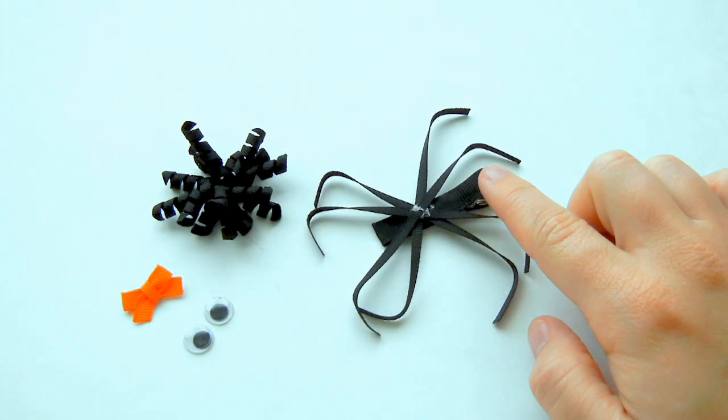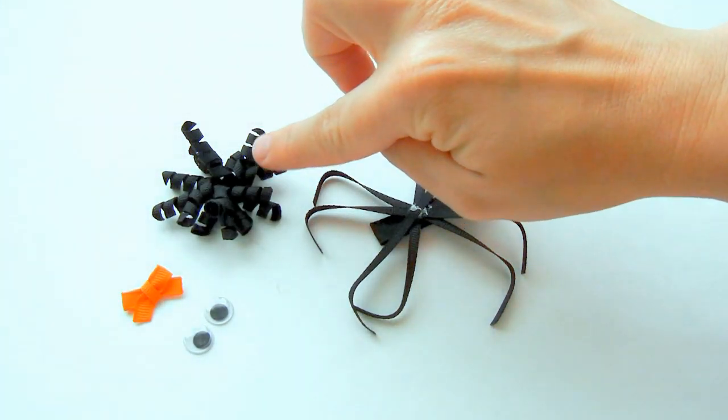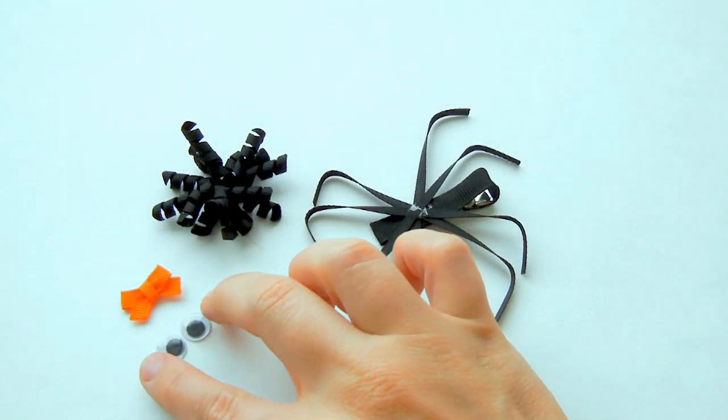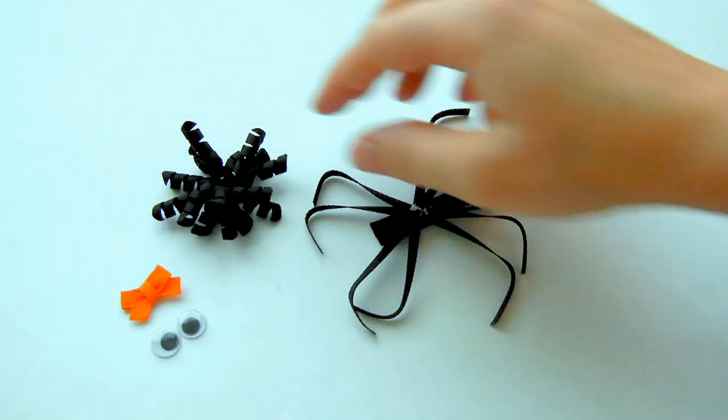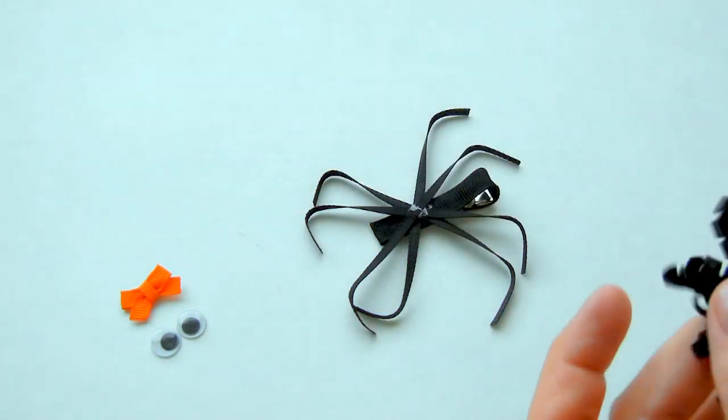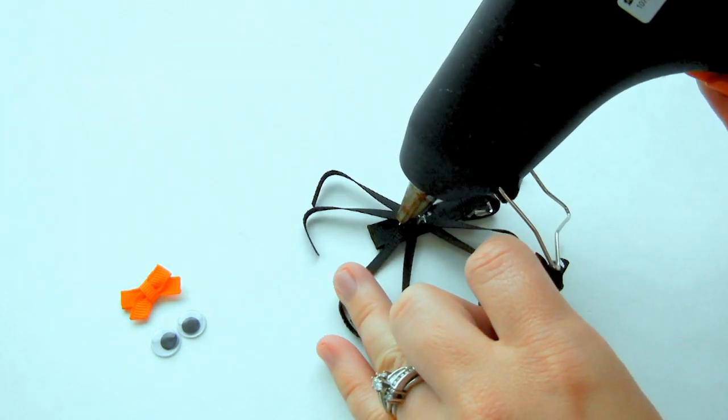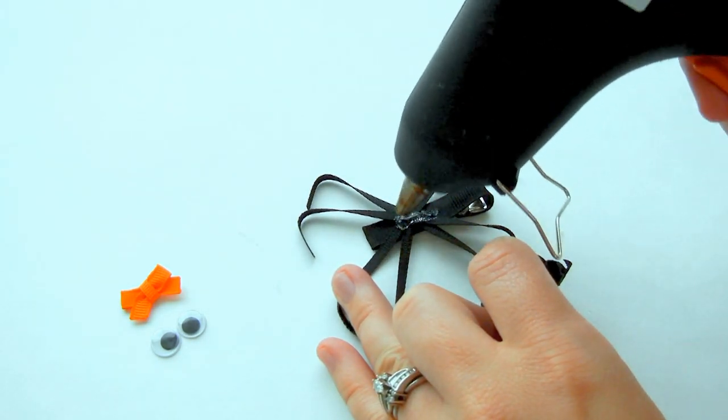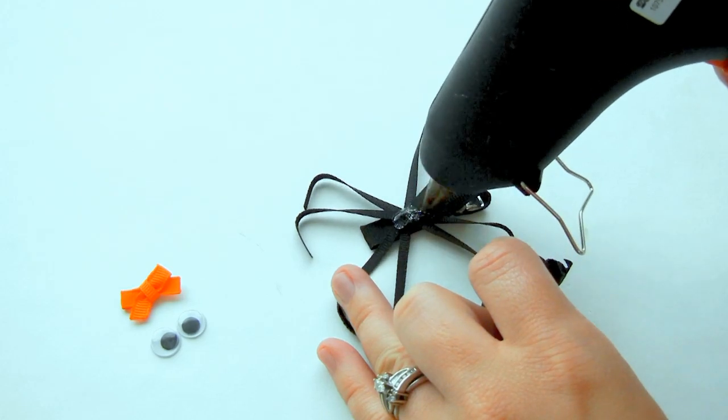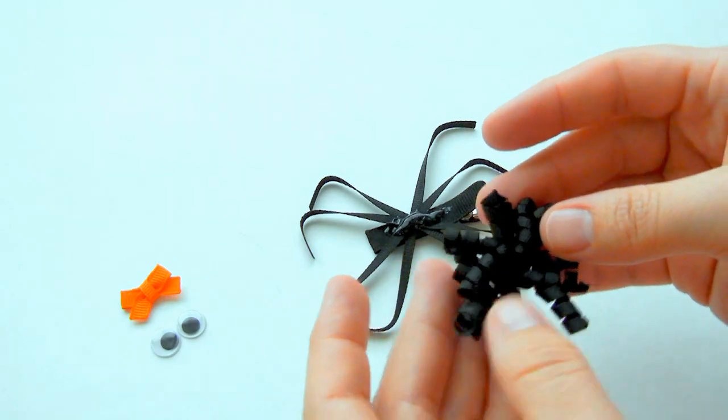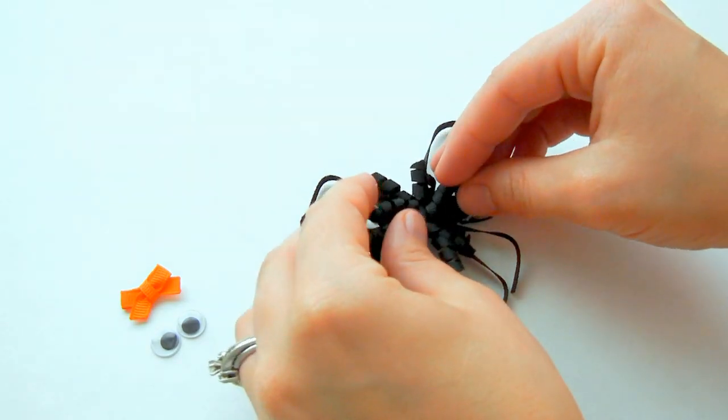Have your clip with your legs, the corker bow, the little bow, and your two googly eyes. We're going to put together our spider ribbon sculpture. Take your little body and then put some glue onto the middle of the clip over the legs. Then we're going to take the body and place it on.